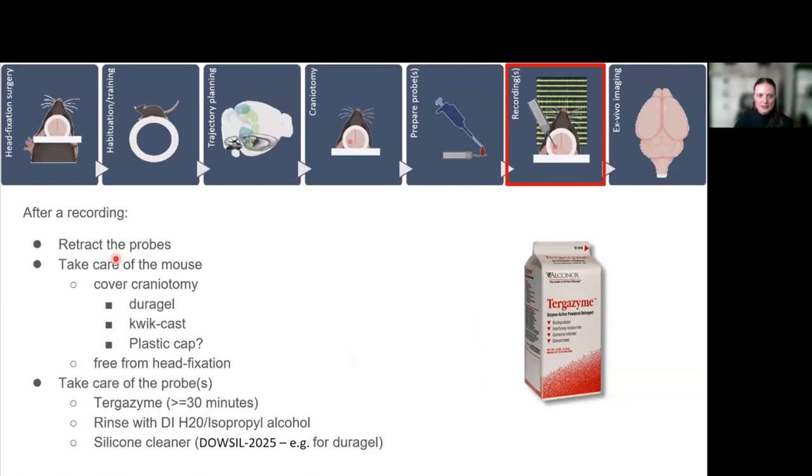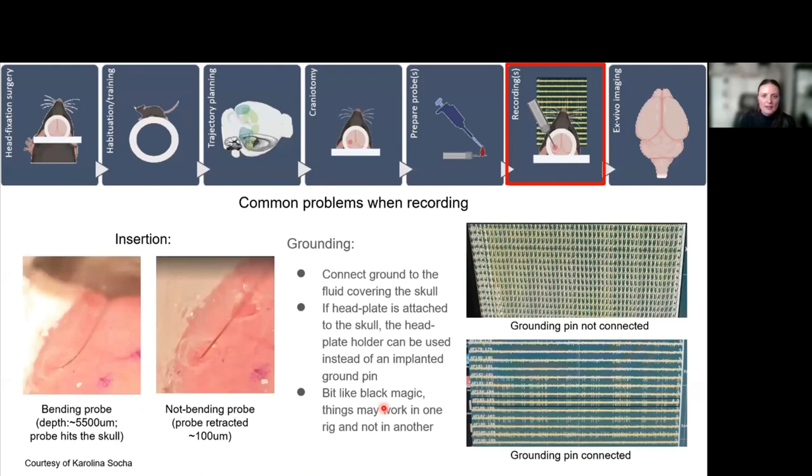After the recording, you have to retract the probes. As soon as you can, take care of your mice, make sure that they're okay, cover the craniotomy with the three things I just discussed, and free them from head fixation. Then you can take care of the probe. It's good to wash it with tergazyme first, which degrades the biological tissue stuck to the probe. Then we usually use deionized water or isopropanol alcohol to rinse it. Like I said, sometimes the DuraGel sticks to the probe and we use silicone cleaner for this.